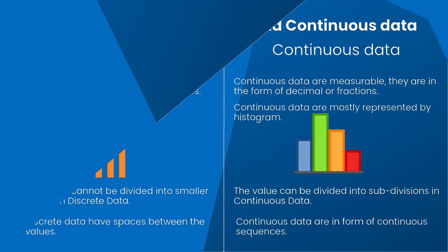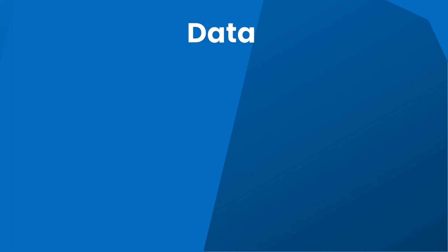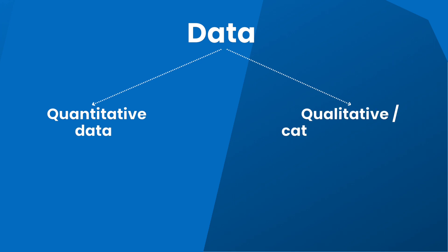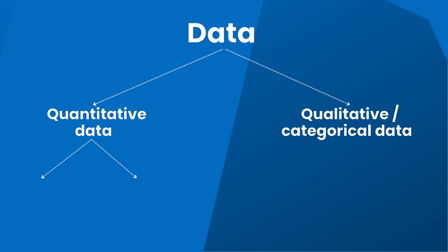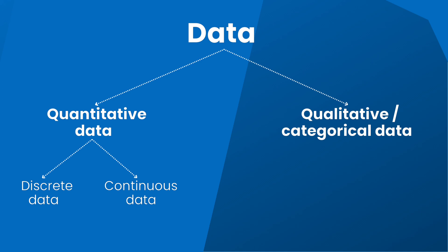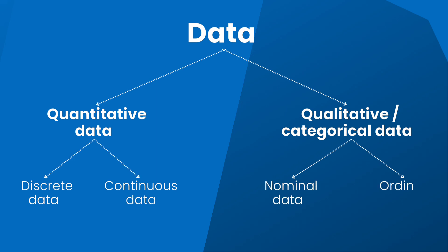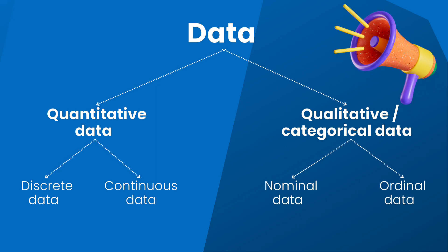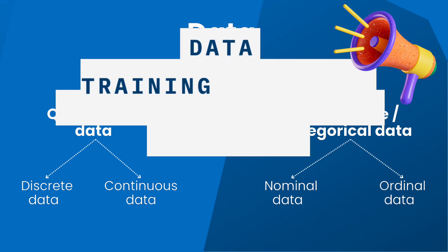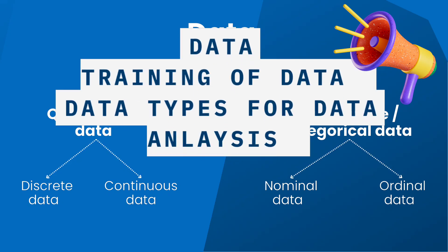To sum up, data can be divided into two broad categories: quantitative data and qualitative or categorical data. Quantitative data is further divided into discrete and continuous data, while qualitative data is further divided into nominal and ordinal data. In upcoming videos we will learn more about data training and data types for data analysis.